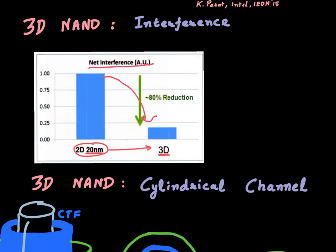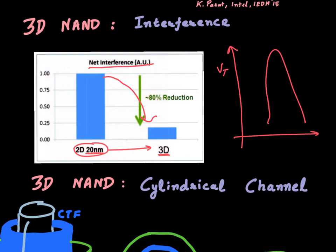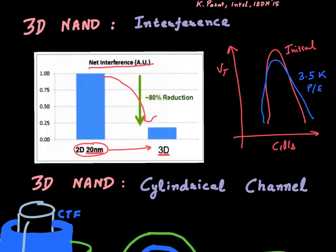As a result of this reduced interference, when you have an array of these cells you get much tighter distributions of threshold voltages, and this threshold voltage distribution remains pretty tight as you cycle the cell. The red distribution might be the initial one and the blue the distribution after a certain number of program and erase cycles. Because of the reduced interference and improved electrostatics, you can maintain a much tighter distribution.